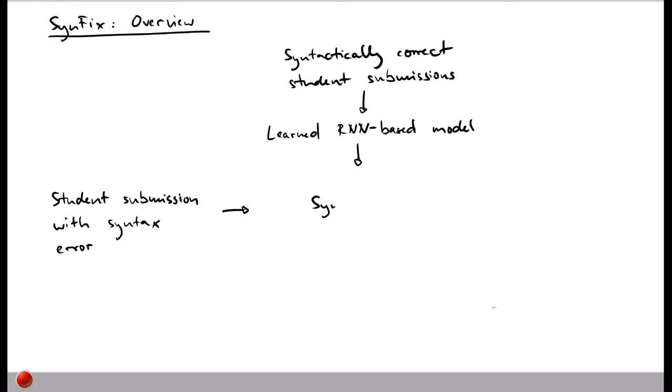And then this model along with the incorrect code is given to the SynFix algorithm which then tries to find some feedback to be given to the student. And specifically this feedback comes in the form of a suggested fix that fixes the code to make it syntactically correct. What's important in this setup is that it's not a complete end-to-end learning based approach because it's not just a model that automatically suggests the feedback but instead this learned model is part of an algorithm and is used as basically one component in a more complex program analysis.